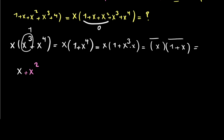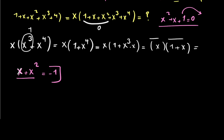Multiplying x by (1 plus x) gives x plus x squared. From our original equation, x squared plus x plus 1 equals 0, so x plus x squared equals negative 1. That is the final answer: negative 1. If you like the video, don't forget to subscribe to the channel, like the video, and thanks for watching!